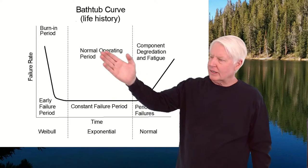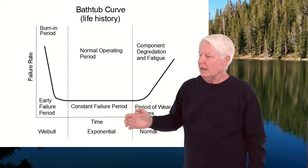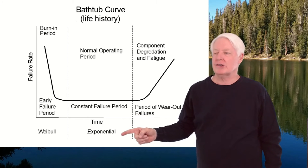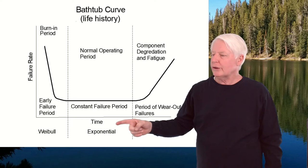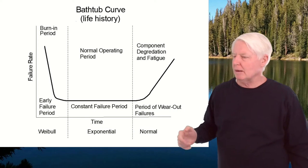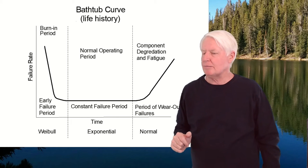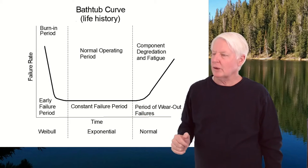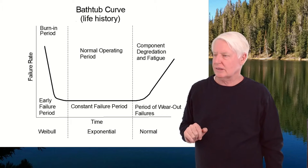The next area is called the normal operating period, or the constant failure period. Here we use the exponential distribution to model this section. We'll do an example problem on the exponential since it's the most common one we focus on.